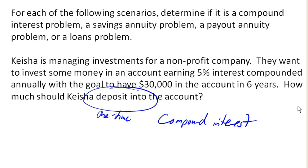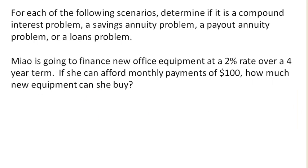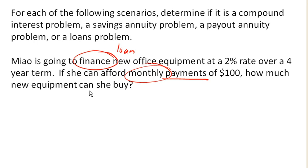Meow is going to finance new office equipment at a 2% rate over a 4-year term. If she can afford monthly payments of $100, how much new equipment can she buy? She's financing at a 2% rate over a 4-year term and she's going to make monthly payments. The word 'finances' often indicates that this is indeed a loan. She's making regular monthly payments, and so this must be a loan-type problem.